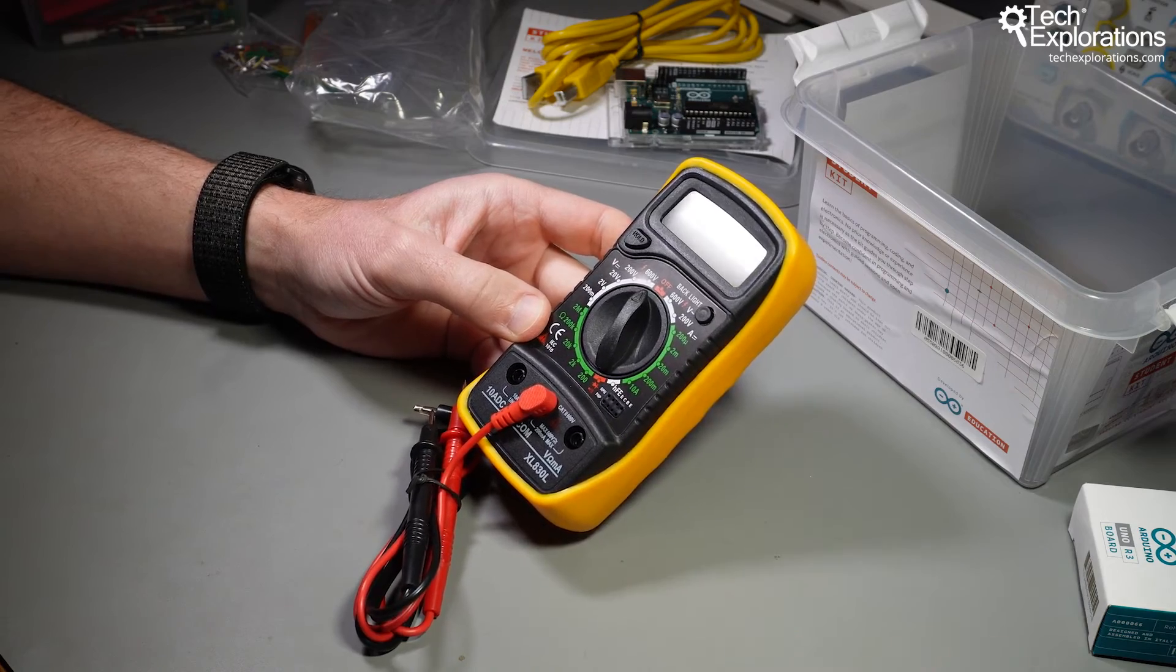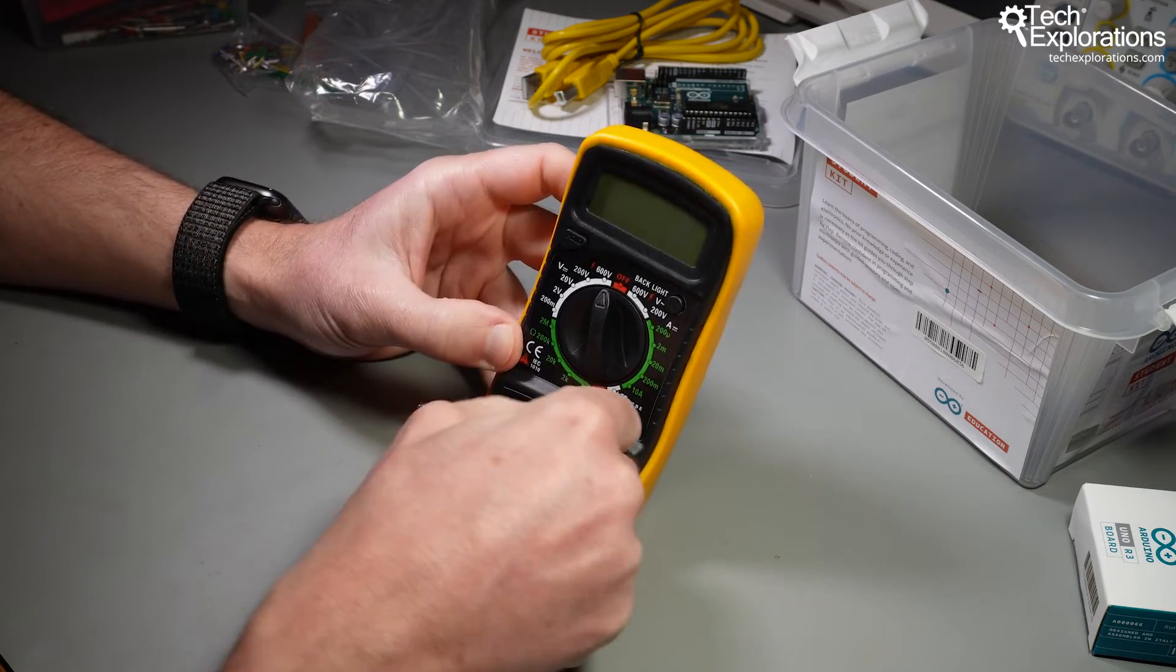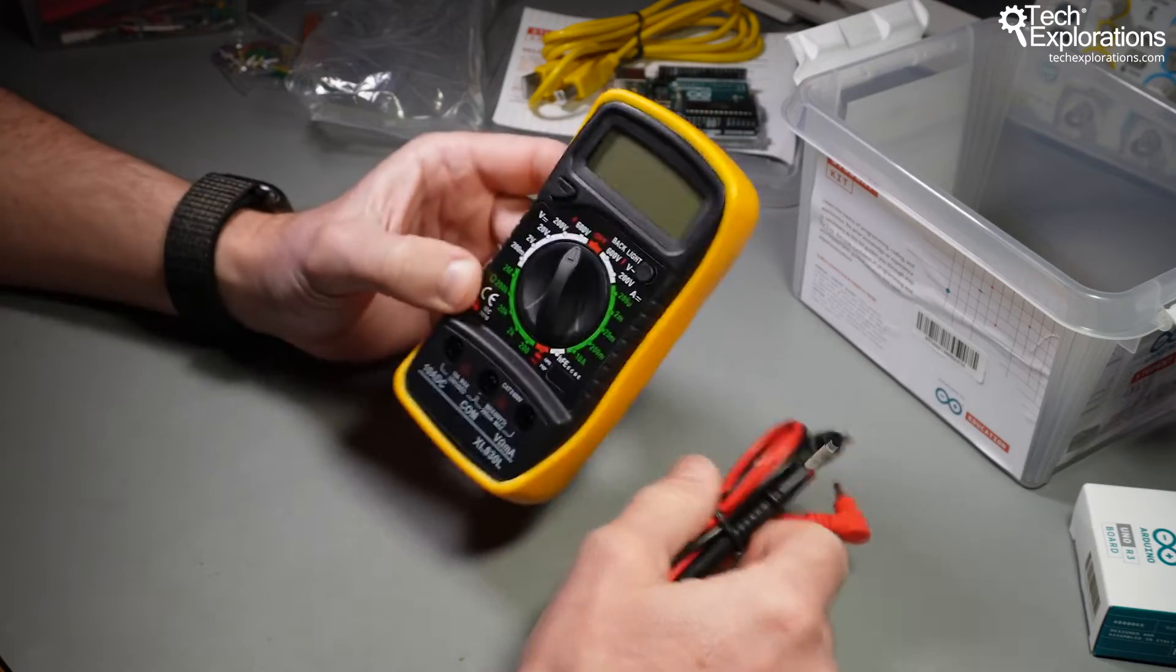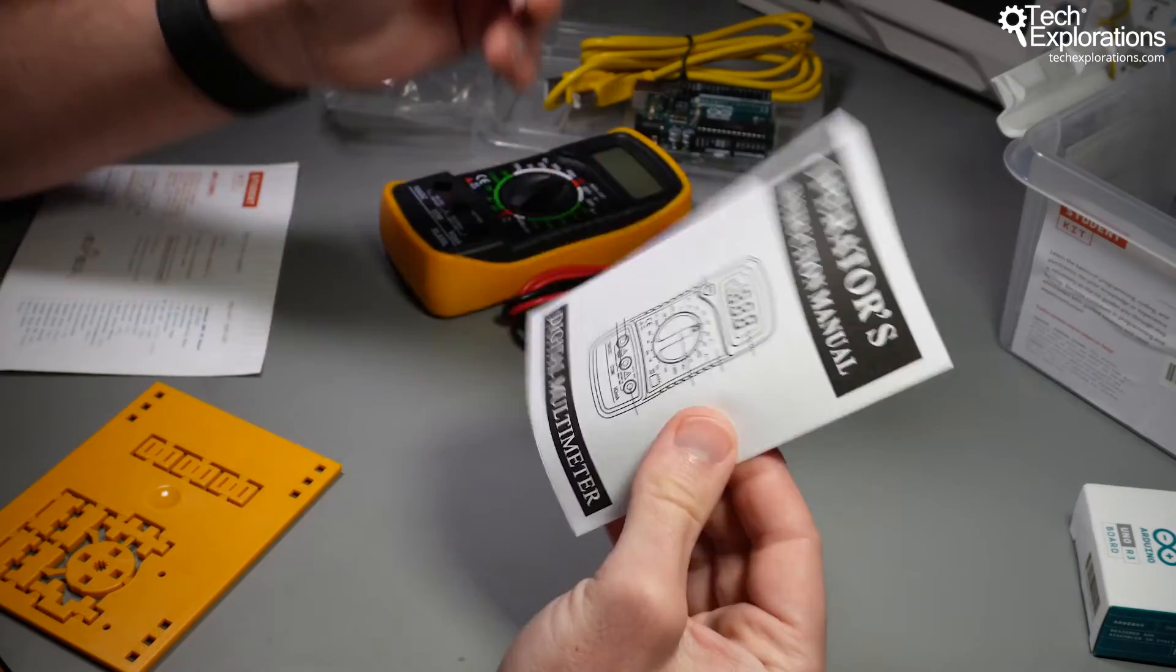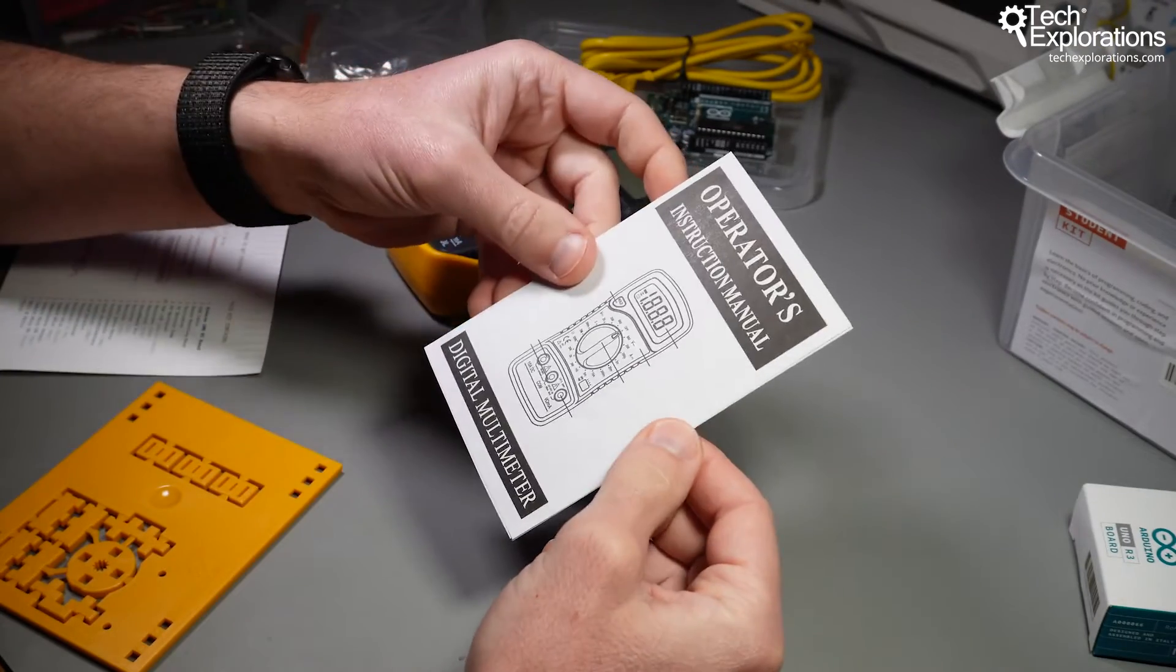and amperage, so the current that is flowing through a circuit. I'll show you how to use this in a later lecture, as I said. So don't worry about this for now. But this is a very useful instrument to have in your kit. And there's also an instruction leaflet for the multimeter.